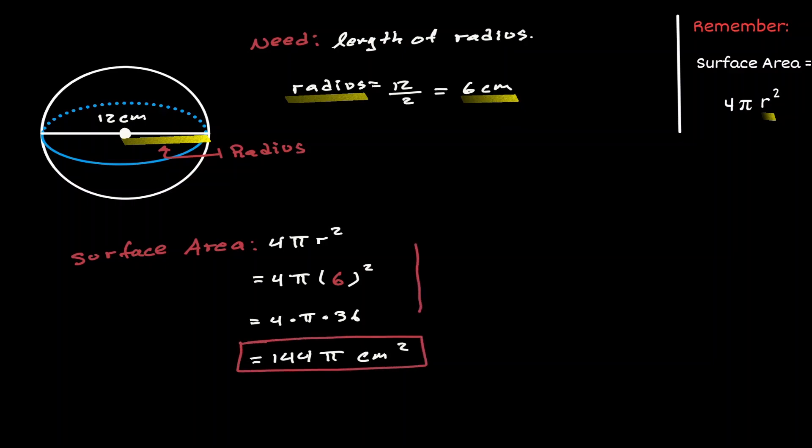Now if we want to approximate this result in decimals, remember that π is approximately 3.14. So in terms of decimals we can say that we have 144 times 3.14, which is approximately 452.16 centimeters squared. Regardless if we have an exact expression or an approximation, we have found the surface area of our sphere.